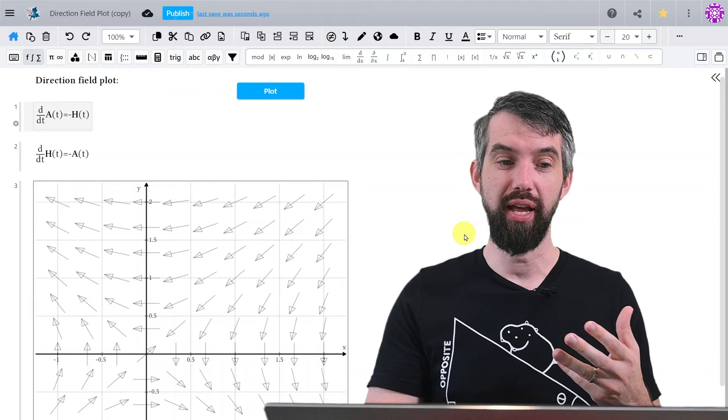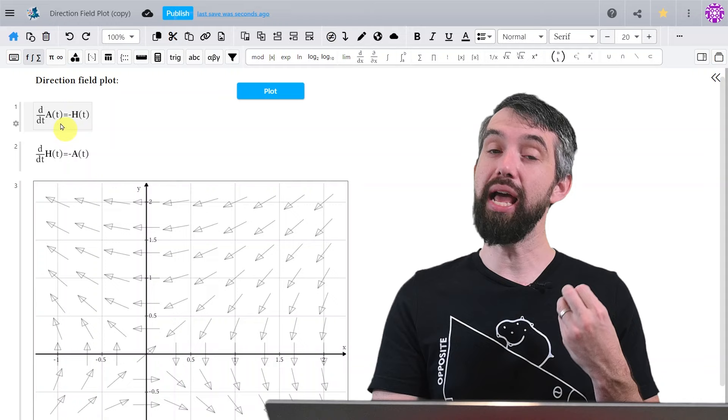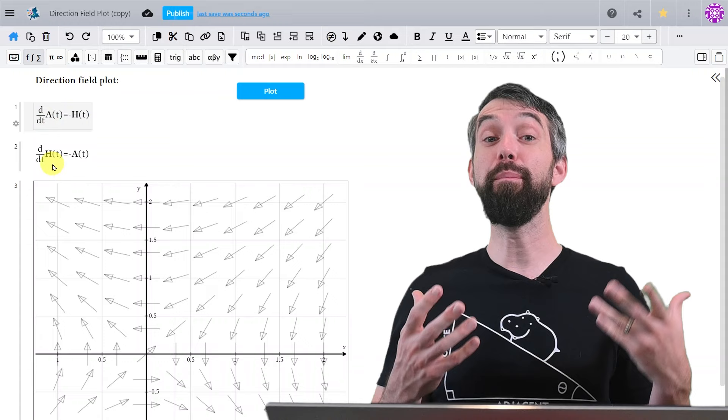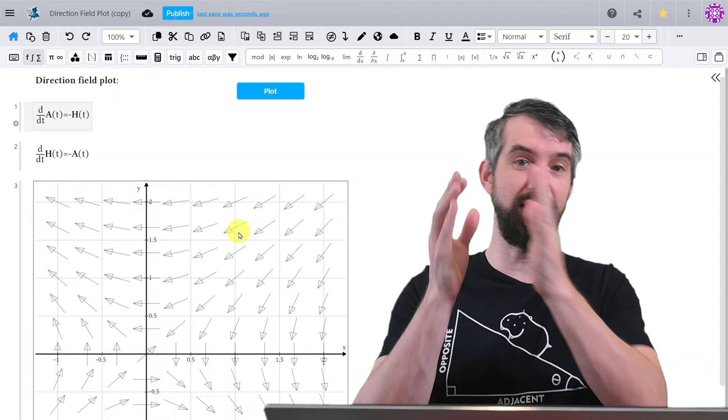So once again, I've put in my derivatives. But if you think about what a derivative does, this is telling me the rate of change of one of the variables with respect to time and the rate of change of the other. I can combine both of these into these little arrows.